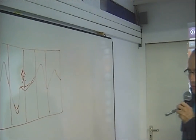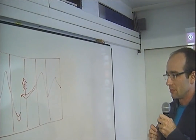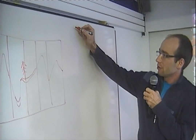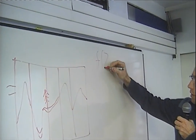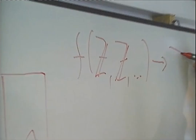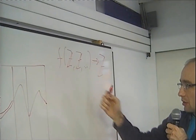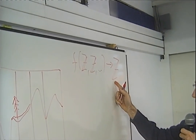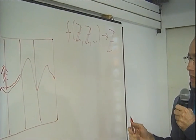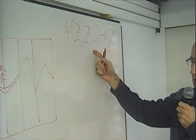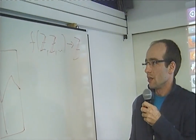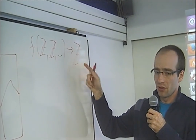Let's take a detour and talk about noise functions. We have a function that takes integer numbers and returns another integer number. The key property distinguishing a noise function from a random function is that the noise function returns the same number when given the same coordinates. A random function just gives you any number; a noise function gives you the same number for the same coordinates every time.